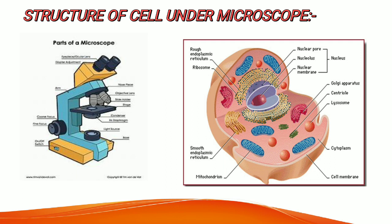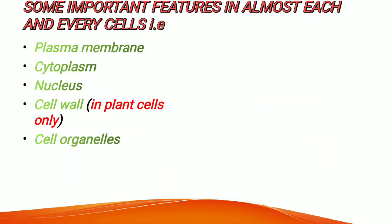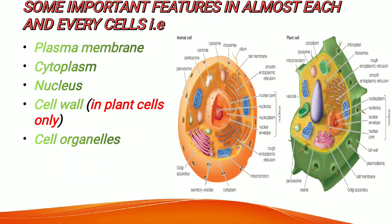We can see all the organelles inside the microscope very clearly. One important feature visible is the plasma membrane, also known as the cell membrane, and also as the selectively permeable membrane. It is the first membrane in animal cells and the second membrane in plant cells.